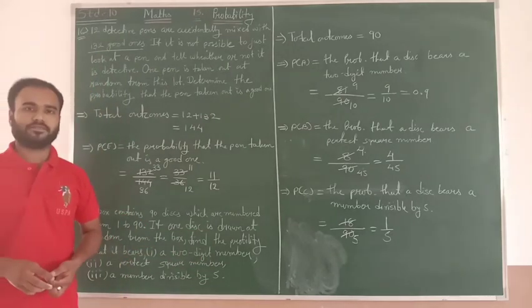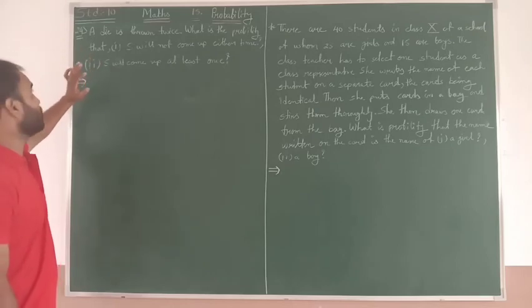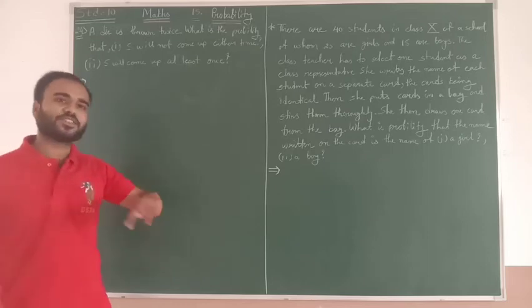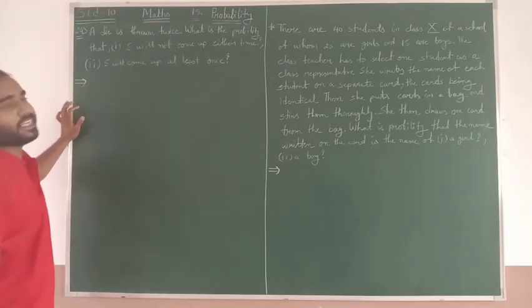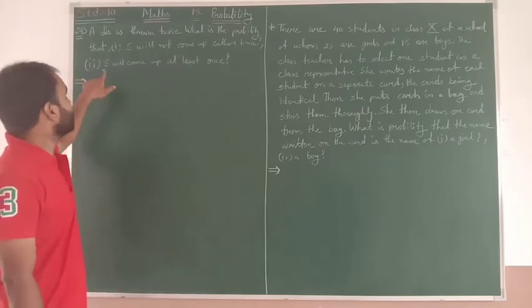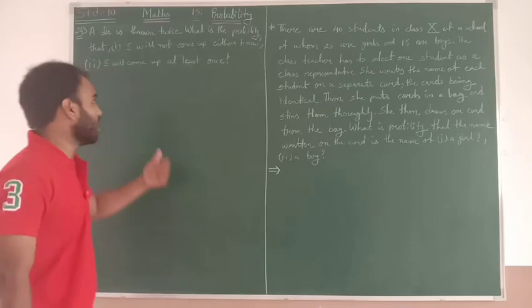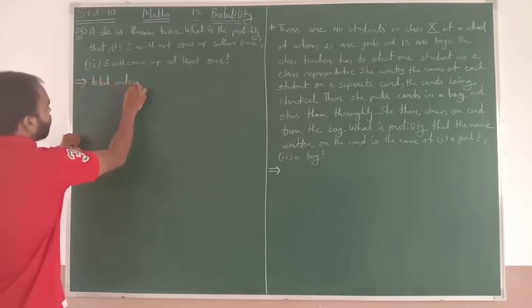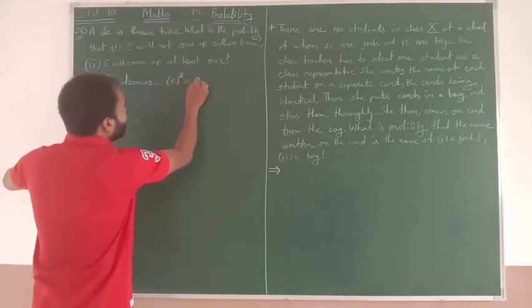So now we will see the next question. The next question is a die is thrown twice. Whether two dice are thrown simultaneously or one die is thrown two times, both events are equal. So a die is thrown twice. What is the probability that five will not come up either time, and five will come up at least once? Total outcomes, as we are learning, when two dice are there, it will be 6 raised to 2. Answer will be 36.